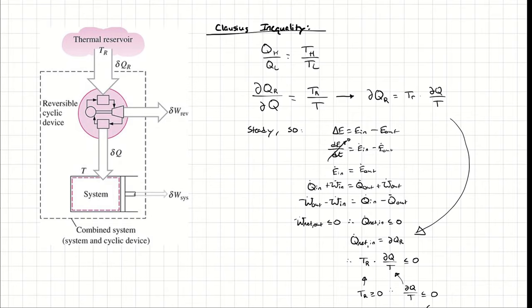Since that heat engine is perfectly reversible, I can apply the substitution Q_H/Q_L = T_H/T_L. The Q_H is going to be δQ_R, the Q_L is going to be δQ, the T_H is going to be T_R, and the T_L is going to be T. Therefore, δQ_R / δQ = T_R / T. If I rearrange that equation, I can write δQ_R = T_R × δQ/T.